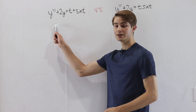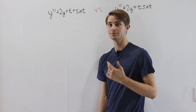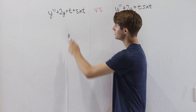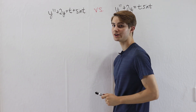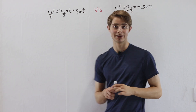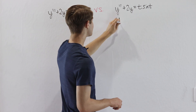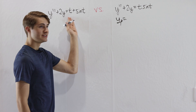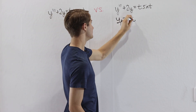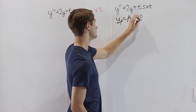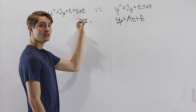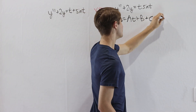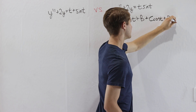We'll start with y double prime plus 2y equals t plus sine t. When doing undetermined coefficients, if we have two things added on the right side of the equation, we add together the guesses. So for the particular solution, the guess for t will be at plus b, and the guess for sine t will add c cosine t plus d sine t.